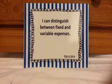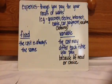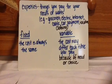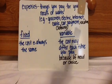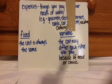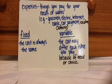I will give you the definitions and we will go over some examples and how to calculate it. First, expenses are things you pay for your needs or wants. Some needs could be like groceries, electric bill, internet, cable, car payment, and things like that. Wants could be vacation, extra clothing, any extra things for your house — things you don't have to get, but you want to get.